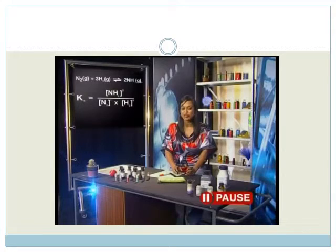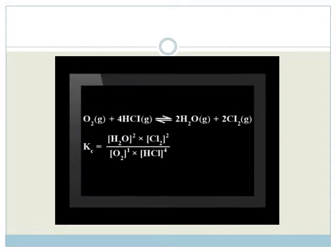Can you write the expression for Kc for the following reaction? Oxygen reacts with hydrogen chloride to produce water and chlorine. Products in the numerator, reactants in the denominator, and ratio numbers now used as exponents. It will come with practice. This reaction is a homogeneous reaction because all the substances are gases.